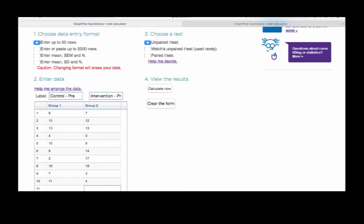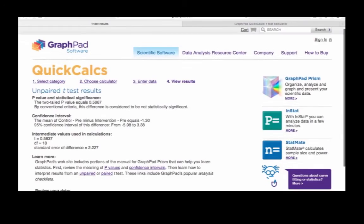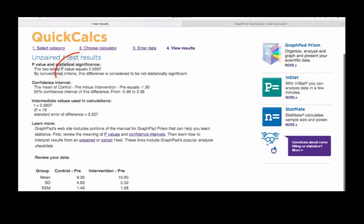Once you've chosen your t-test, just hit calculate now. GraphPad will calculate a p-value and tell you whether the difference between your two groups is considered statistically significant or not. Let's take a closer look at what that p-value really means.